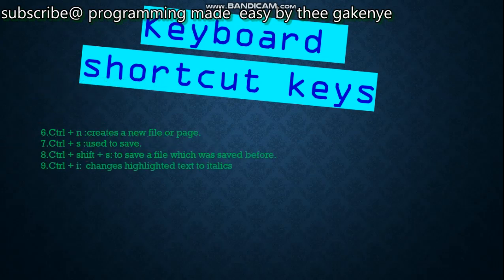Number eight: Ctrl+S — used to save a file. Number nine: Ctrl+Shift+S — used to save a file that was saved before under a new name. For example, you can save a file and later come back and save it again with a different name using Ctrl+Shift+S.